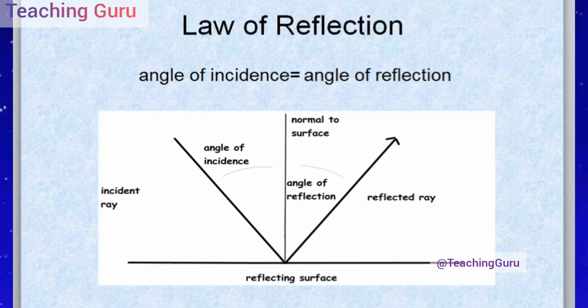The law of reflection states that the angle of incidence is equal to the angle of reflection, measured normal to the surface. When a ray strikes a reflecting surface and rebounds back, it does so with the same angle at which the ray was incident. The angle of incidence equals the angle of reflection, and this is measured from the normal to the surface.